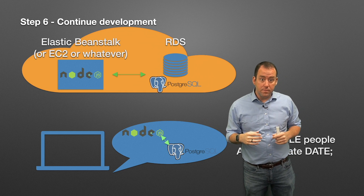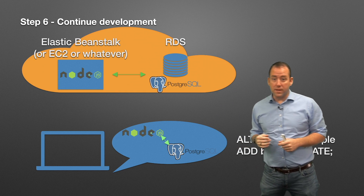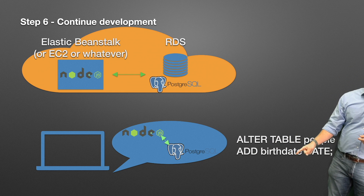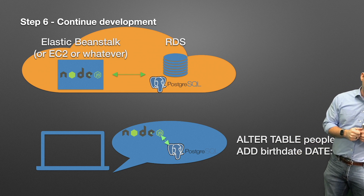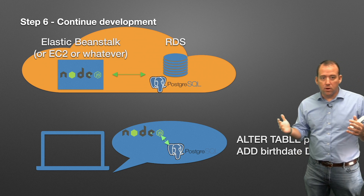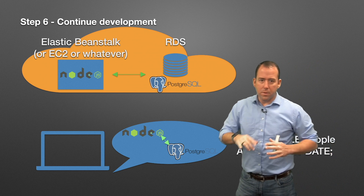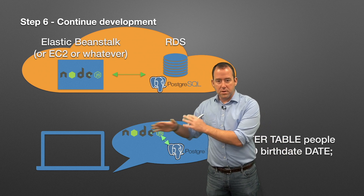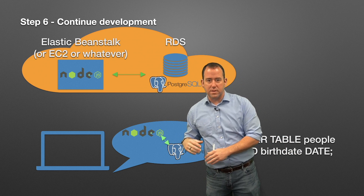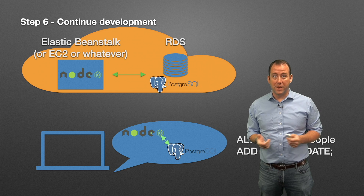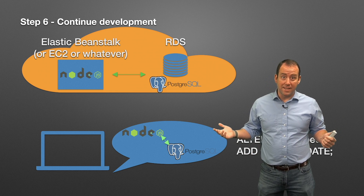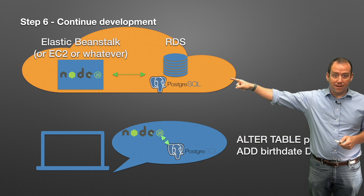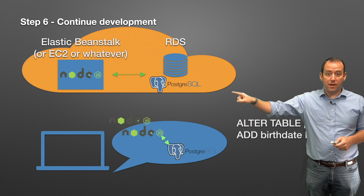But it doesn't stop there — you have to keep going. Maybe you want to add a new table, or a new column like 'birth date'. In your local development environment you add that column, your code can now work with birth date data — that's great. But just like you had to run CREATE TABLE on both environments initially, now you have to run ALTER TABLE on both your local and your cloud database.